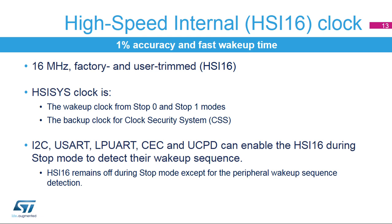The high-speed internal oscillator is a 16 MHz RC oscillator which provides 1% accuracy and fast wake-up times. The HSI-16 is trimmed during production testing and can also be user-trimmed. The HSI-16 clock, which is the HSI-16 divided by HSI-DIV, is used as the clock at wake-up from stop 0 or stop 1 modes. HSI-16 can be used as a backup clock source, i.e. auxiliary clock, if the HSE crystal oscillator fails, which is detected by the clock security system.